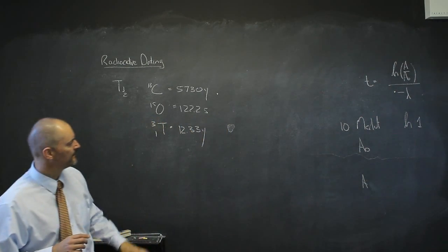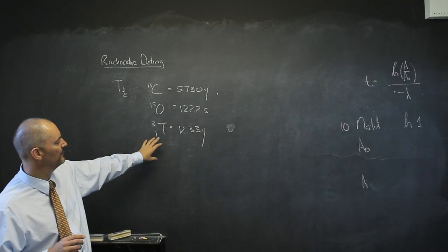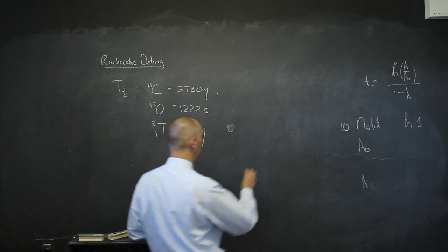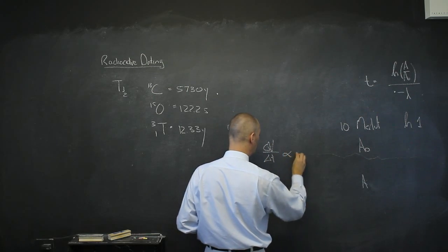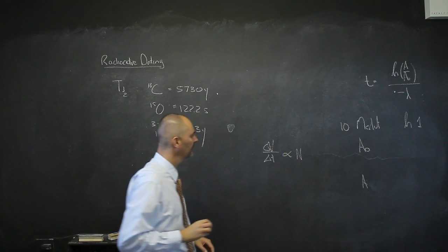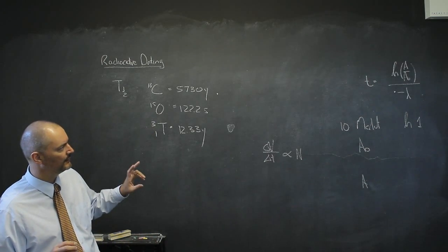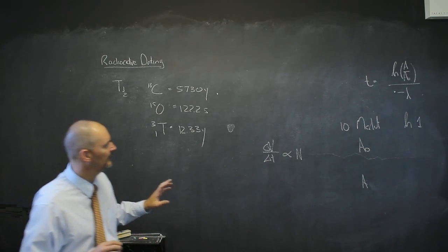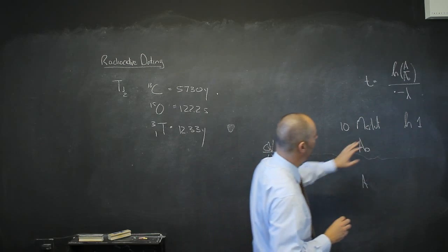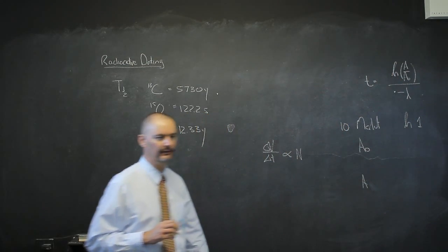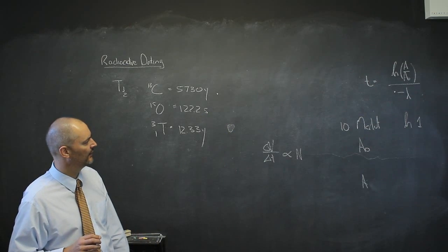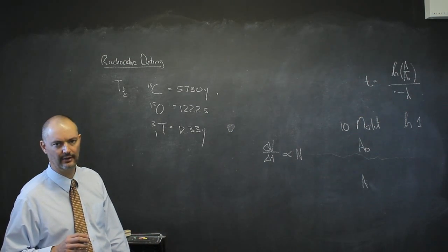In other words, about half of them would have disappeared, and we know that delta N divided by delta T is proportional to how many there are now. There's going to be a substantial difference between A and A0, which will give me a nice fraction to get a natural logarithm of with a negative value to give a good estimation of the time, the age of that wine.